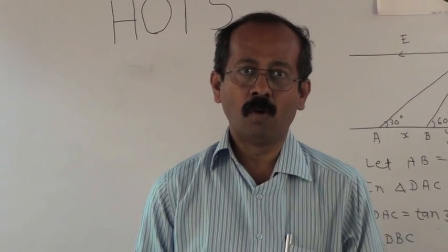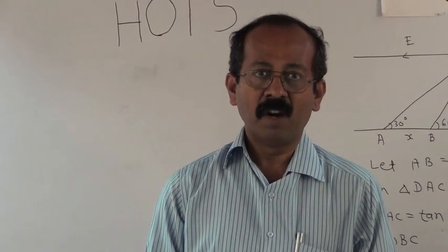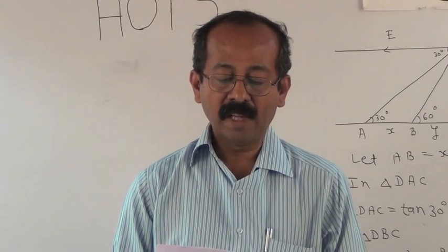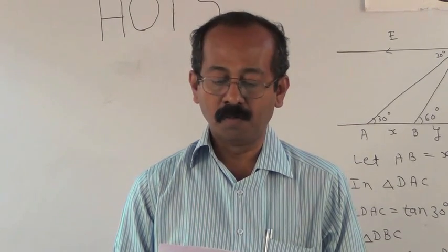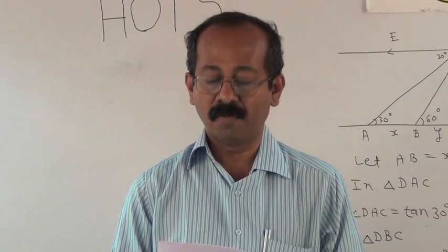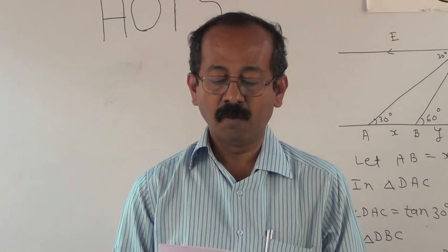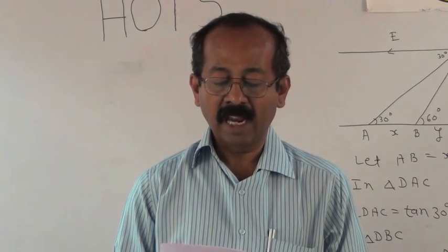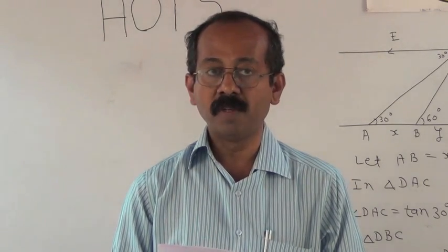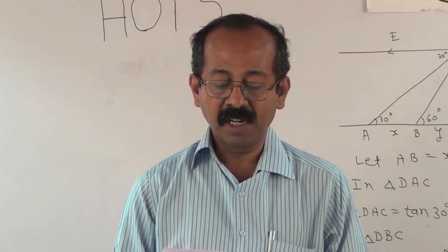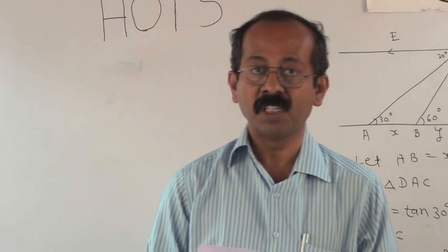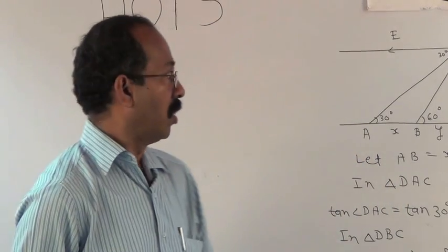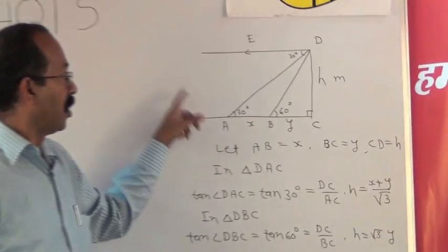Students, let us go for the fourth example. It is a word problem. A straight highway leads to the foot of the tower. A man standing at the top of the tower observes a car at an angle of depression of 30°, which is approaching the foot of the tower with uniform speed. Six seconds later, the angle of depression of the car is found to be 60°. Find the time taken by the car to reach the foot of the tower from this point. So for solving such type of a word problem, we have to draw the correct figure. The figure is shown over here.